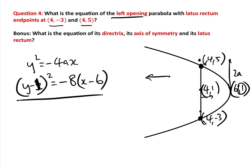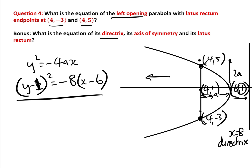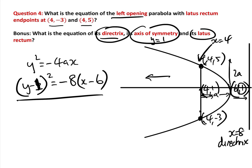For the bonus: the directrix is 2 further to the right of the vertex, so x equals 8 is the directrix. The axis of symmetry runs through the vertex horizontally, so it is y equals 1. The latus rectum passes through the focus, so it is the line x equals 4. That covers all the basics of parabolas — as long as you know your formulas, the questions shouldn't be too bad. If you found this video useful, please press the thumbs up and subscribe to the Gressy Academy YouTube channel.